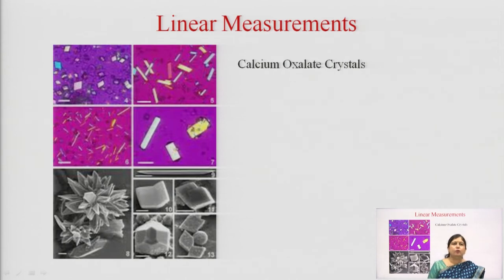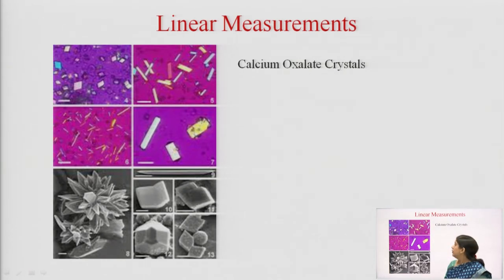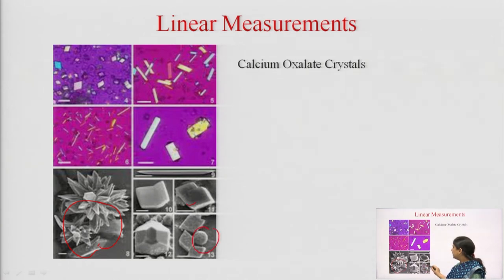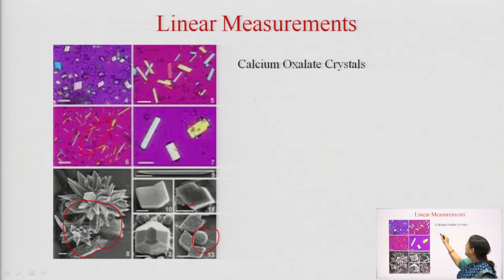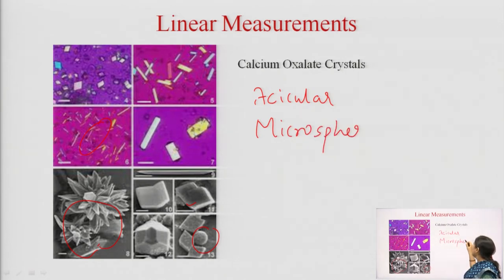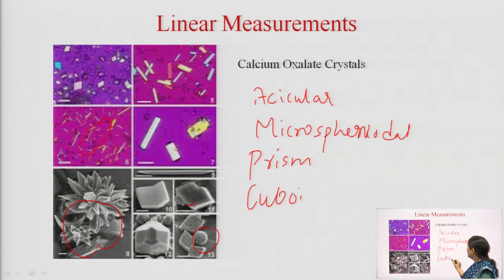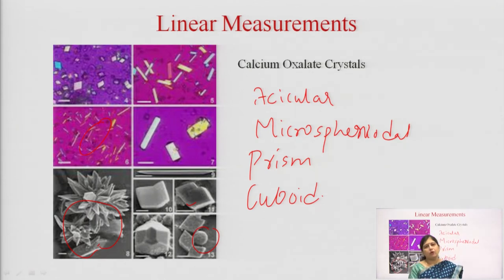Calcium oxalate crystals present in plants can be in any shape or form. For example, they can be rosette-shaped, cubical, spherical, or needle-shaped. We have different types: acicular (needle-shaped), microsphenoidal (when acicular crystals come in a bunch), prismatic (prism-shaped), and cuboid. If we determine and report the size of these calcium oxalate crystals, they become an identifying character for the quality of that particular drug substance.